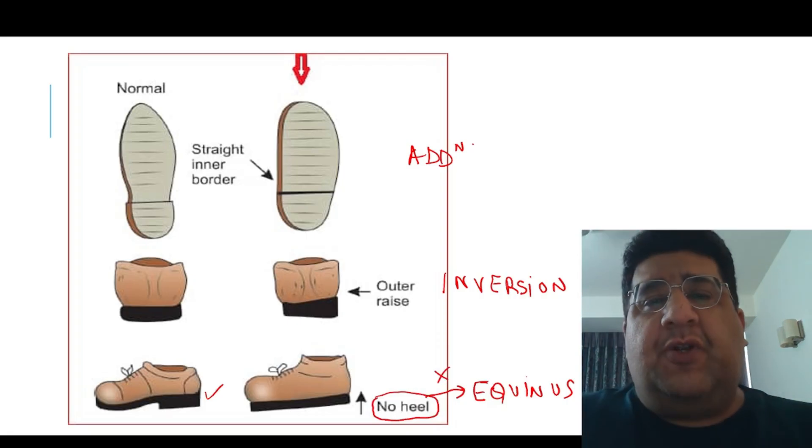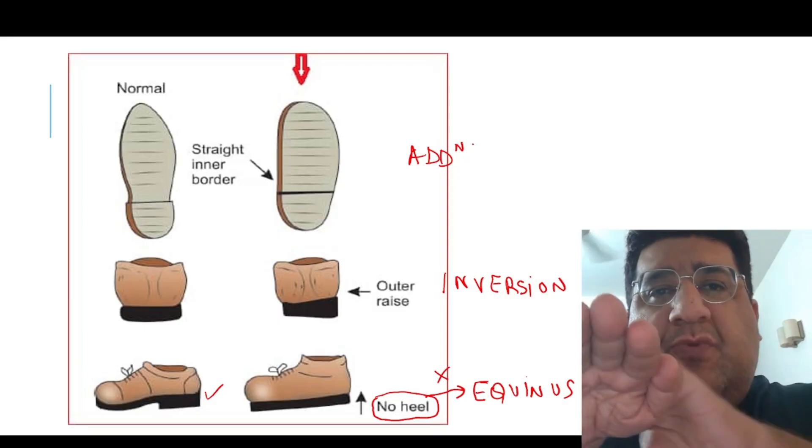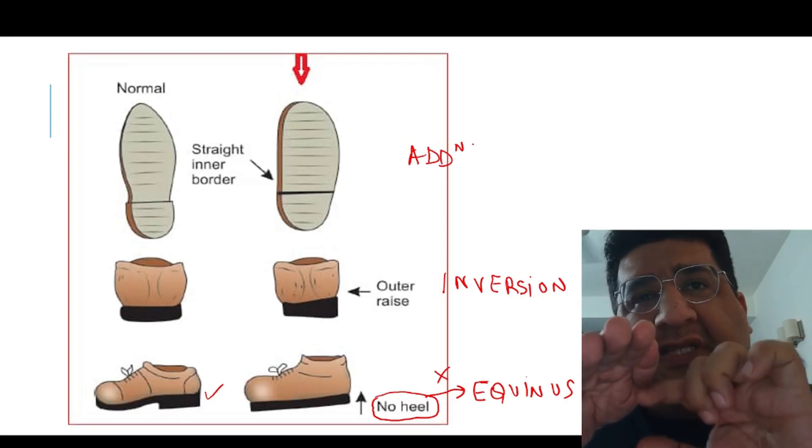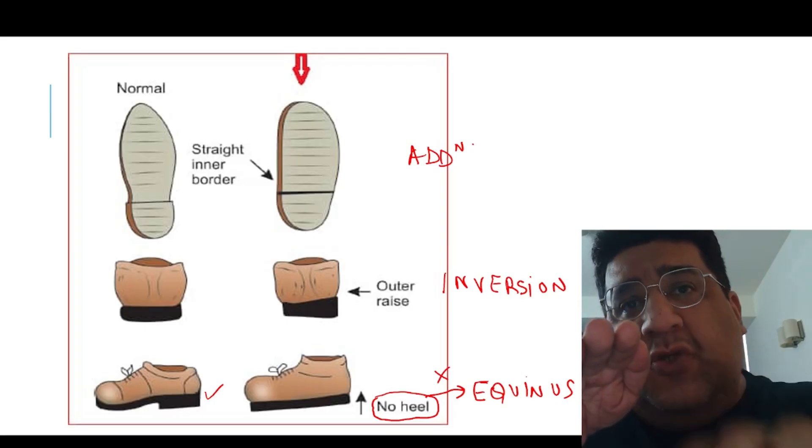The second thing is we deal with a deformity called inversion. Now normally every shoe has a slightly inner raise, and if you have a normal shoe with an inner raise, that will lead to inversion. Do we want that to happen? No.